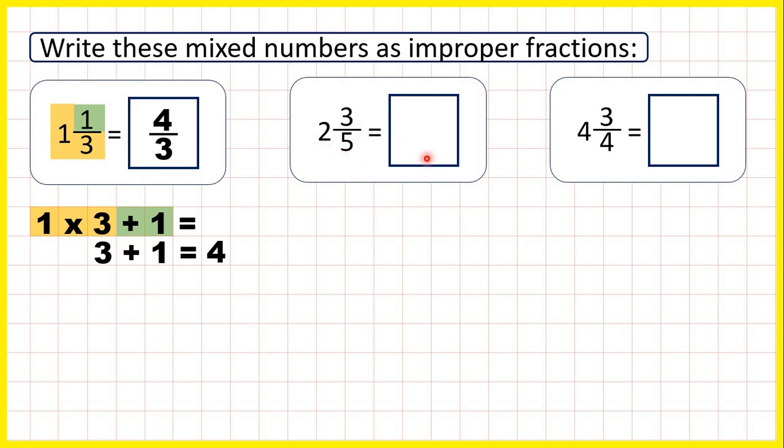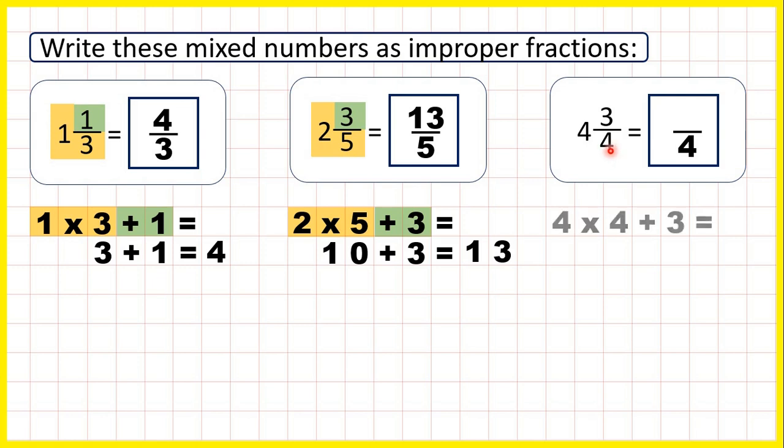Now we have two and three fifths. The denominator stays the same, then two times five is ten, plus three is thirteen, so our numerator is thirteen. Now four and three quarters, the denominator stays the same, then four times four plus three.